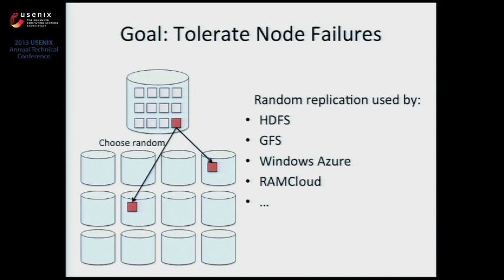As most of you know, cloud storage systems typically spray their data across thousands of commodity servers. When you have thousands of servers, these servers die periodically, and there's a pretty high chance that you'll need to deal with these node failures. So one of the main goals of data center storage systems is to tolerate node failures.